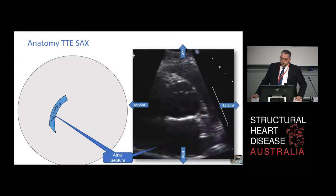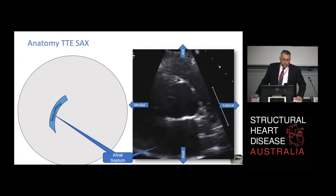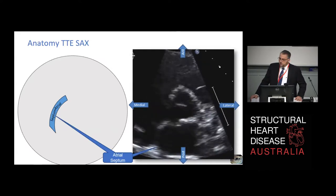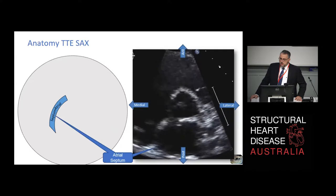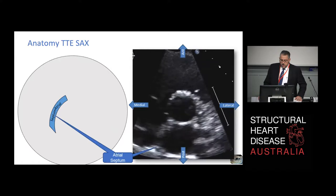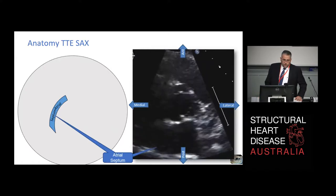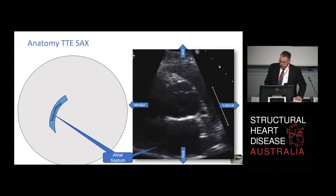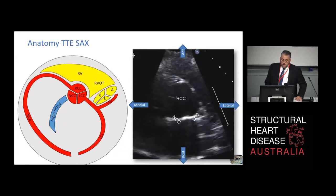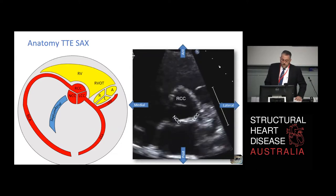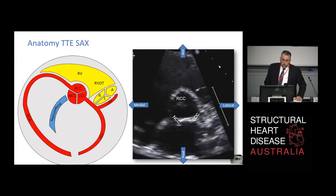Remember that in this view you're looking from the feet, so lateral on the human being is right on the TV and medial is left on the television. Posterior is obviously towards the floor and anterior towards the top of the sector. The atrial septum is right in the middle of the picture and is bowing from LA to RA, because the pressure in the left atrium is always - in 99% of people - higher than the RA pressure. Anterior to the atrial septum is the aortic root and the aortic valve.